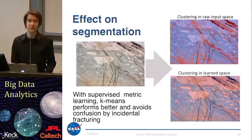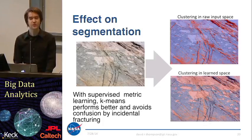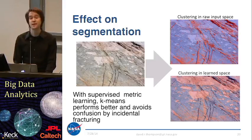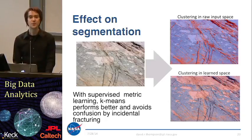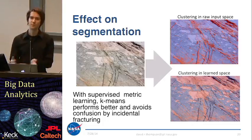Here's a visual example on that image I showed before. The fractures, instead of getting their own cluster, after we learn the distance metric appropriately, we can get the system to autonomously recover the compositional differences in the rock and avoid the fracture confusion. This is just one of many examples where multiclass discriminant analysis can improve unsupervised clustering. This pre-transformation trained on labeled data can be used to improve a totally unsupervised clustering approach on future images.